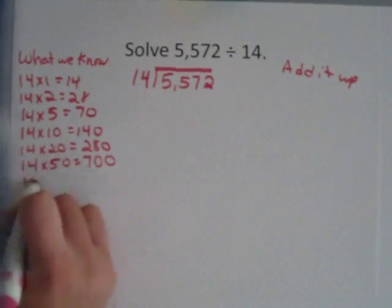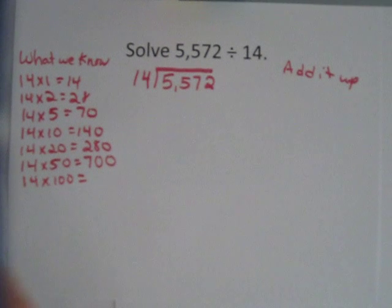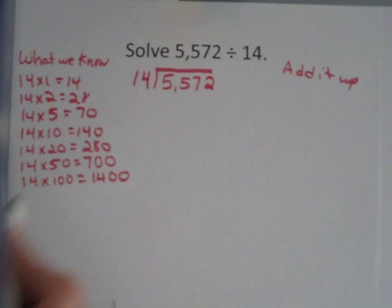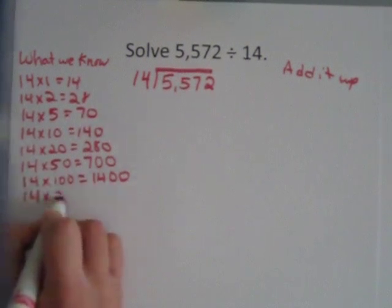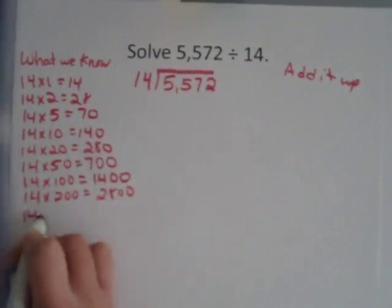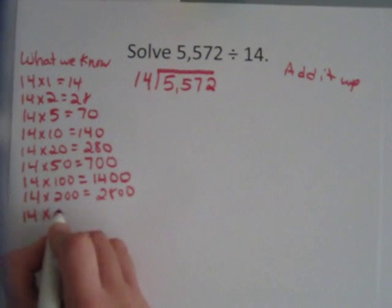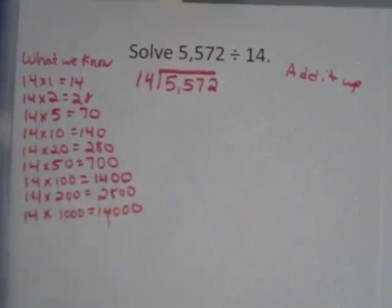Then I'm going to do 14 times 100. We generally stick with similar numbers each time. 100 times 14 is 1,400. 14 times 200 is 2,800. And 14 times 1,000 would be 14,000. That's too much now, so I have enough to work with.